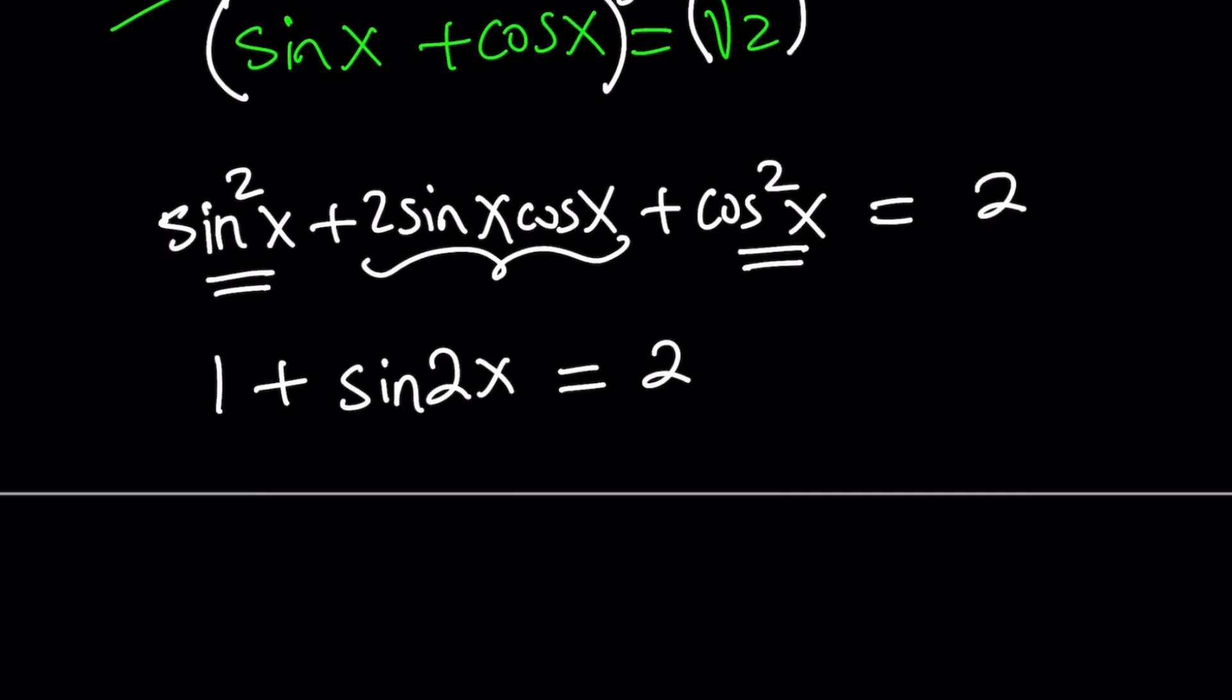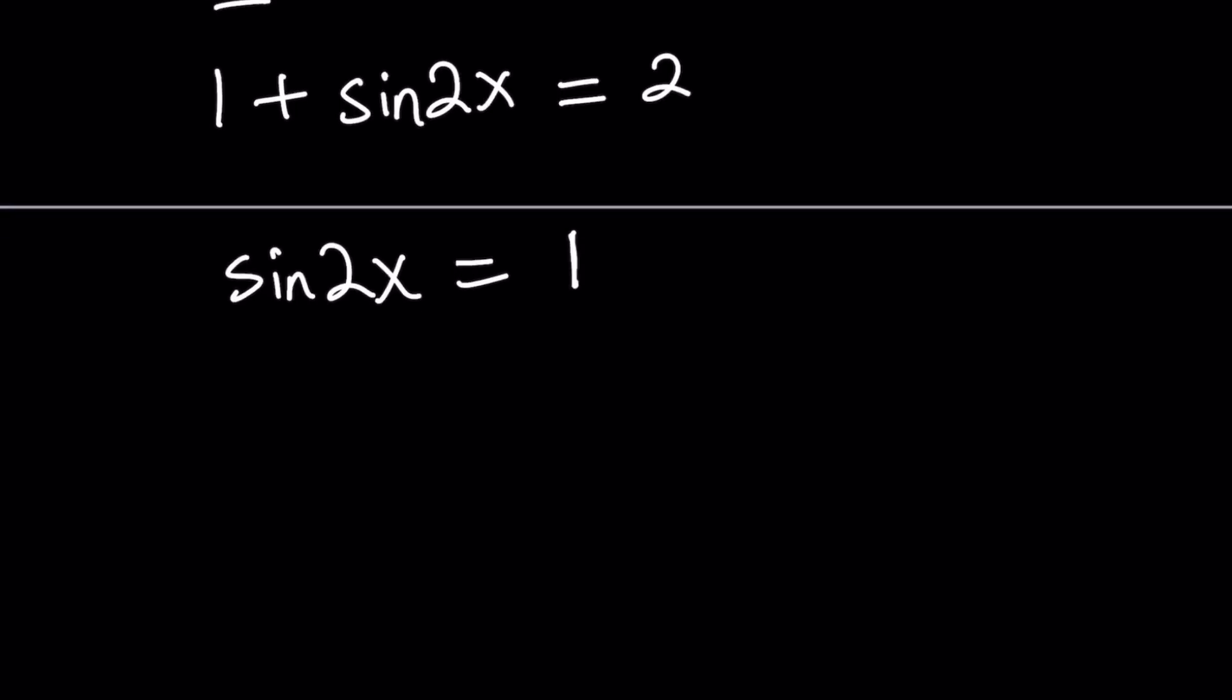Subtract 1, you get the following. Again, the sine of which angle is 1? The answer is pi over 2. So let's go ahead and replace 2x with pi over 2 and then we have to add multiples of 2 pi or even multiples of pi. If you want you can use a different variable, it's just a dummy variable.